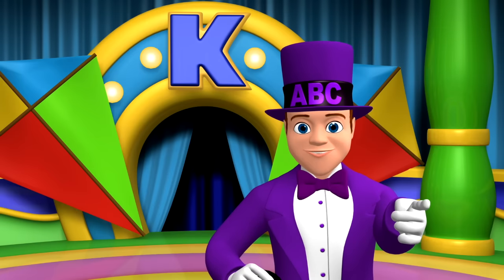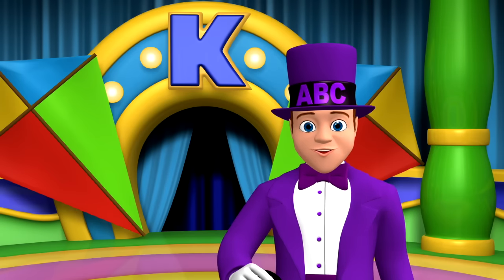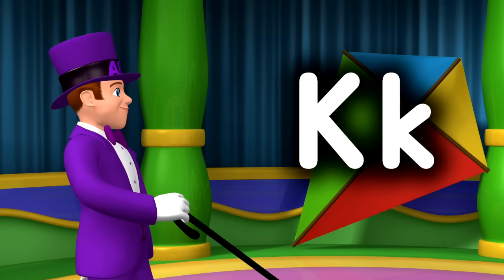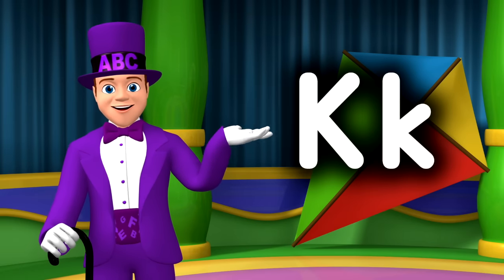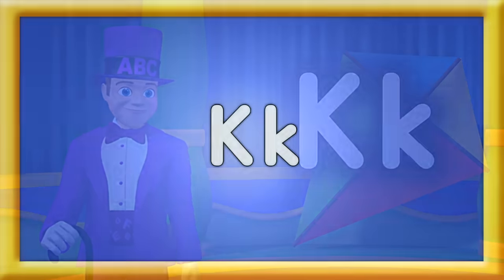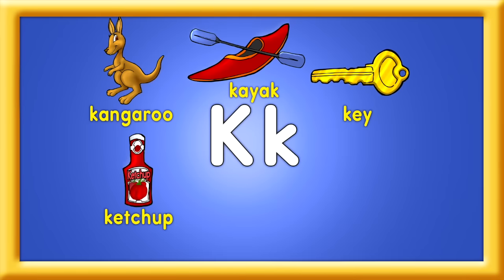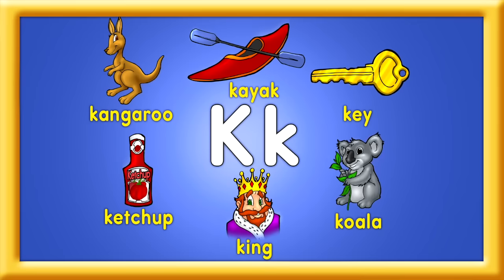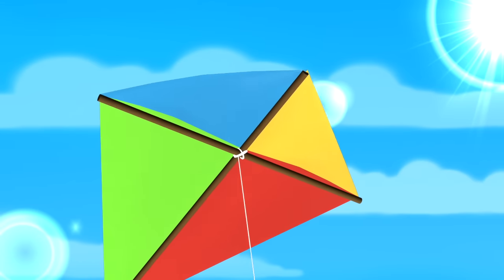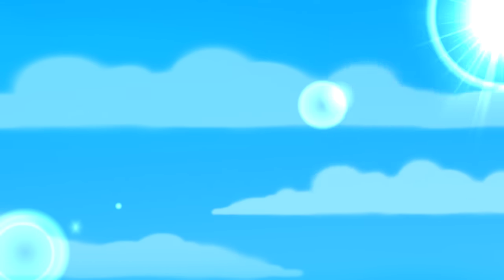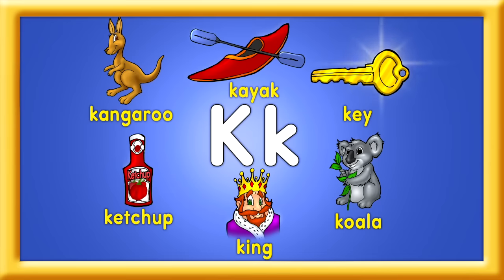Keep it up. You're doing great. It's time to learn the letter K. Oh my! There's a capital K and a lowercase k. Kangaroo, kayak, and a key. These K words are fun for me. Ketchup, king, and koala, too. Are more K words I sing with you. Kangaroo, kayak, and a key. Ketchup, king, and koala, too.